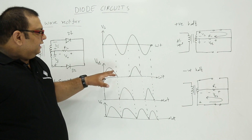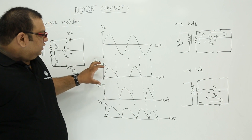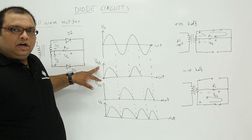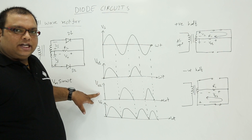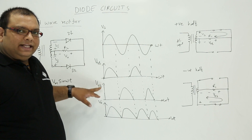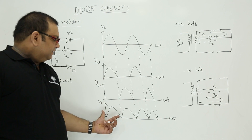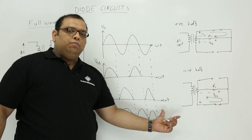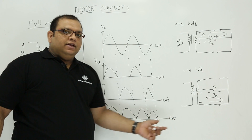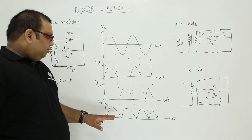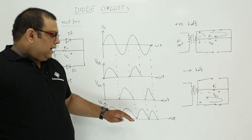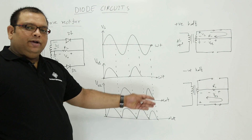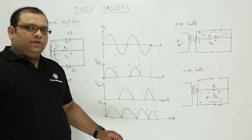When you combine the two outputs — diode D1 conducting during the positive half and diode D2 conducting during the negative half — this gives the final output waveform where both positive and negative halves are converted into positive pulses only.